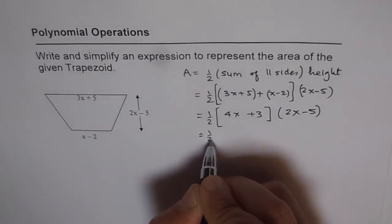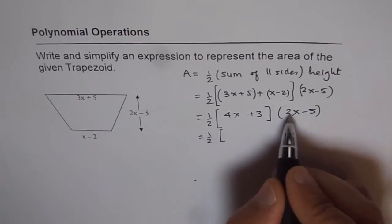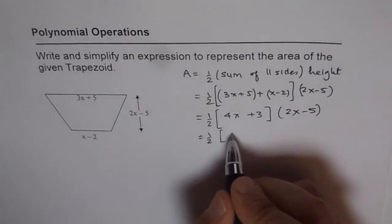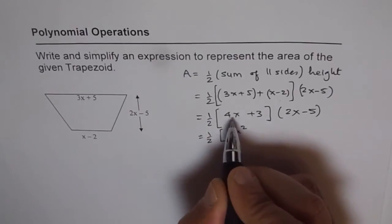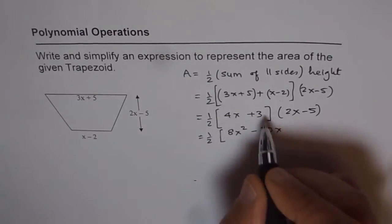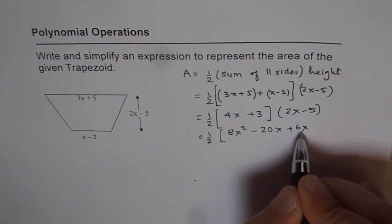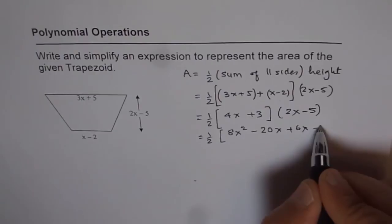So, we get half times, now we will do distributive property. When you multiply 4x times 2x, you get 8x squared. Now, 4x times minus 5 is minus 20x, 3 times 2x is 6x, and 3 times minus 5 is minus 15.